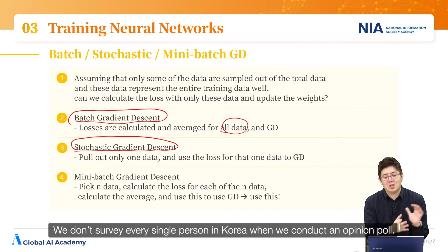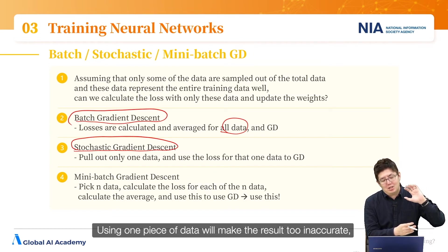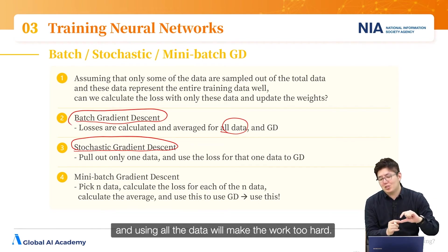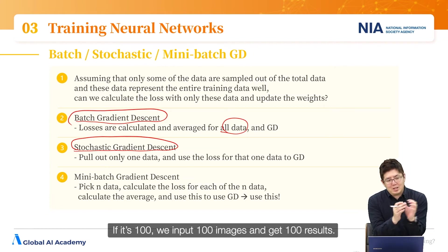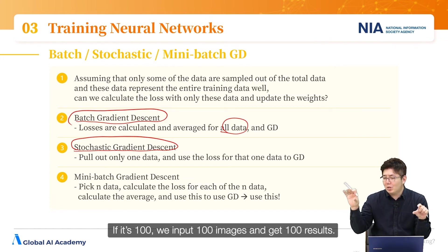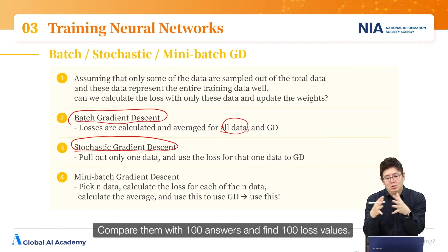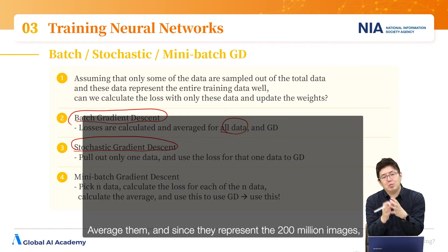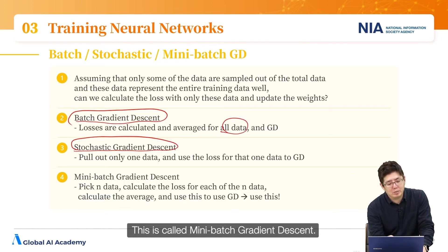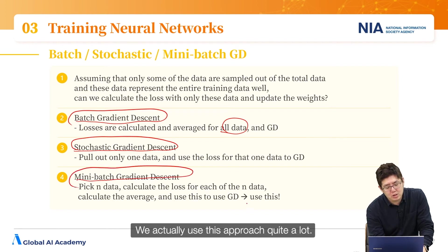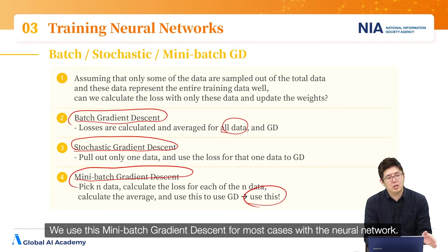Same as with an opinion poll — we don't survey every single person. Using one piece of data makes the result too inaccurate, and using all the data makes the work too hard. So we choose a reasonable number like 100 or 200. If it's 100, we input 100 images, get 100 results, compare them with 100 answers, find 100 loss values, average them, and since they represent the 200 million images we update the weights accordingly. This is called mini-batch gradient descent.